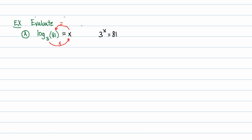Now remember what we're trying to find here — we're trying to find the value of x. Well, 3 to what power is equal to 81? If you're saying the 4th, you're absolutely right. 3 to the 4th power is equal to 81. You can either just recognize that, or you could recognize that 81 is 3 to the 4th. Since these bases are the same and these exponential expressions are equivalent, their exponents are the same. So log base 3 of 81 must equal 4.